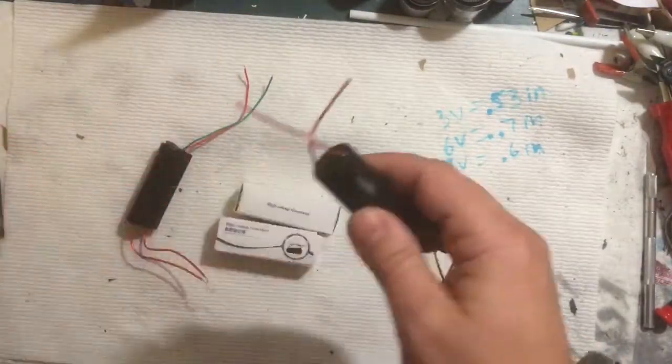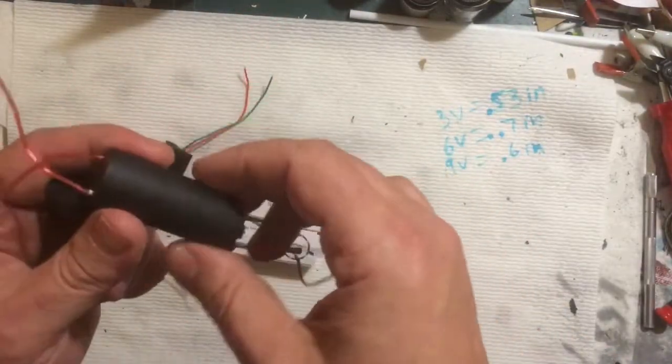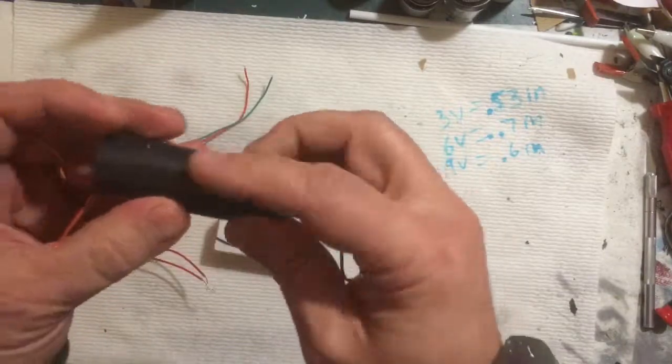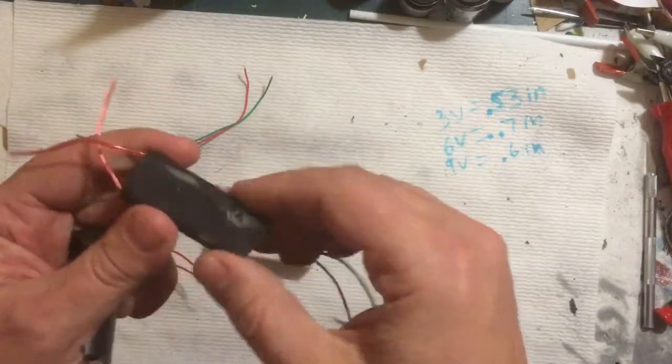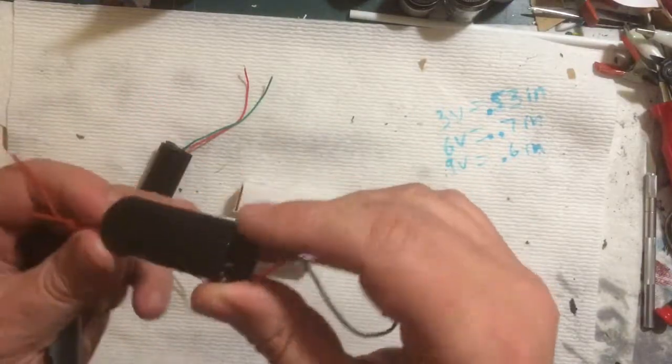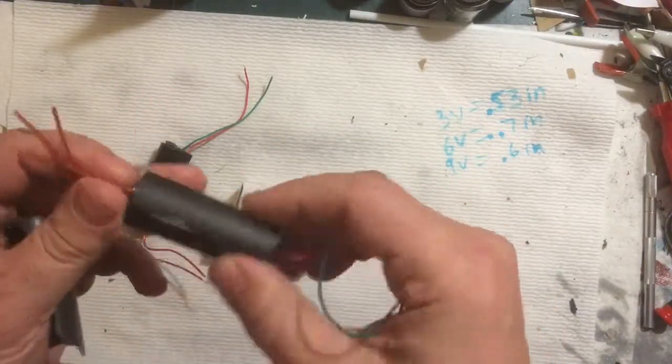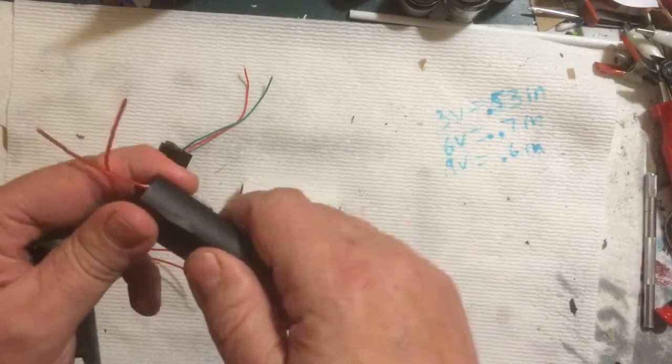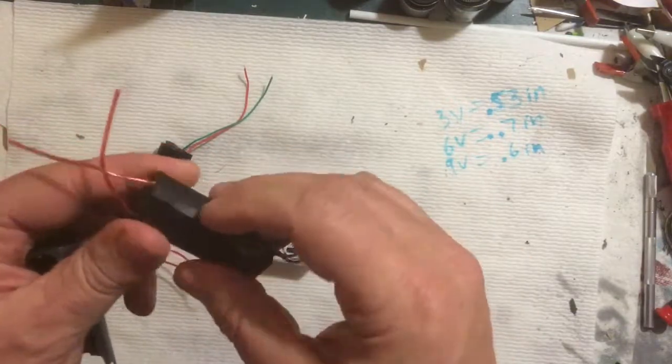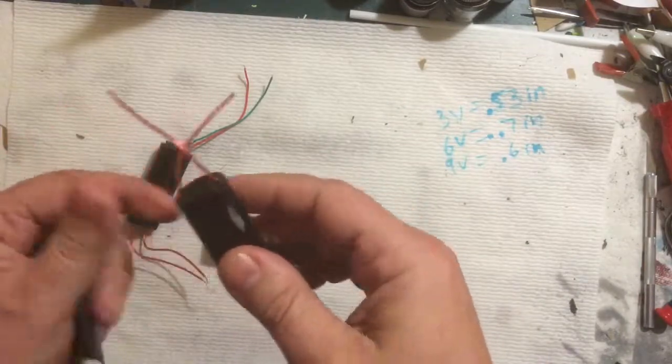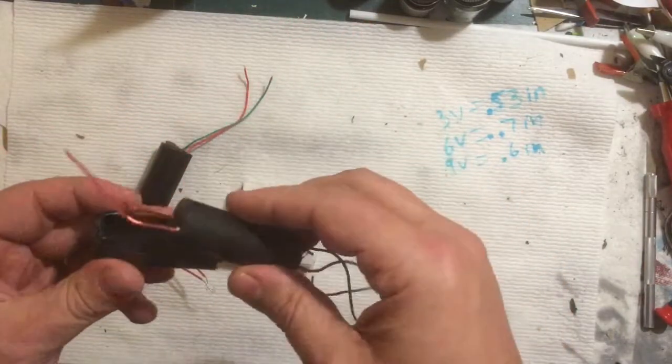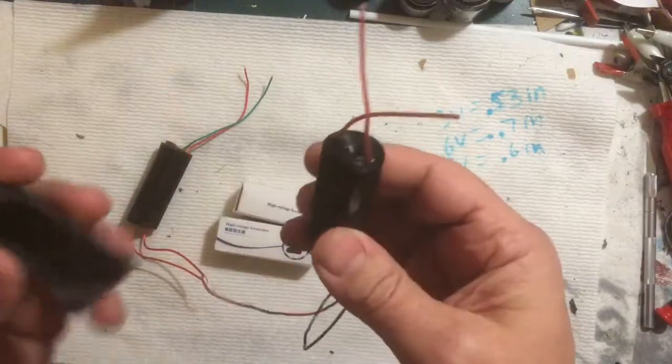With that one that failed, I took it apart—if you want to call that taking it apart. I pulled off the heat shrinkable plastic that was over top of this, which is just epoxy. They potted all of the circuitry in solid epoxy, so I'm not going to grind into that to find a circuit because it would be a waste of time and make a huge mess.